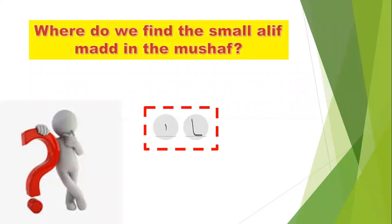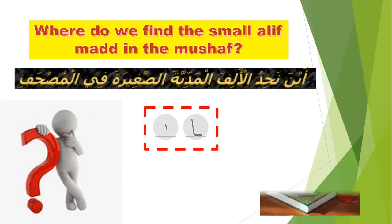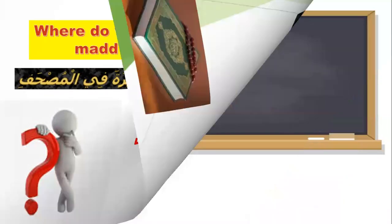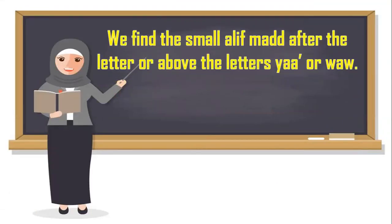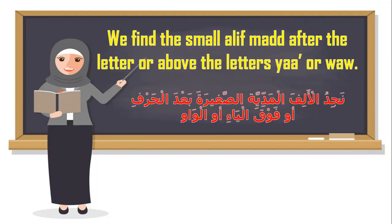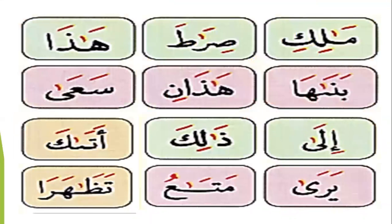Where do we find the small alif mad in the Mushaf, in the Qur'an? We find the small alif mad after the letter, or above the letters diya or waw. For example, in the word 'maliki' — can you see the small alif mad in 'maliki' after the letter ya?